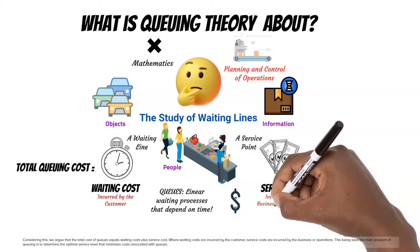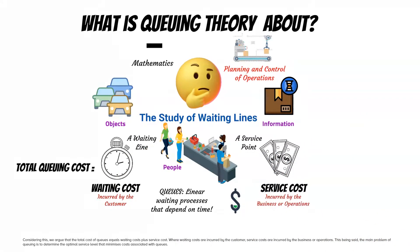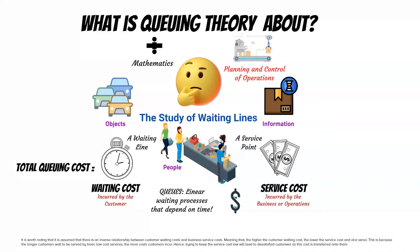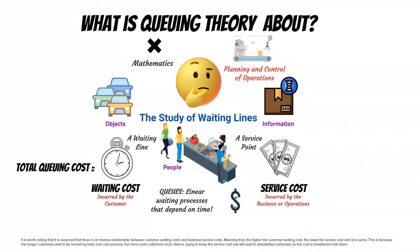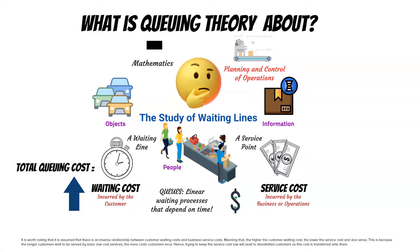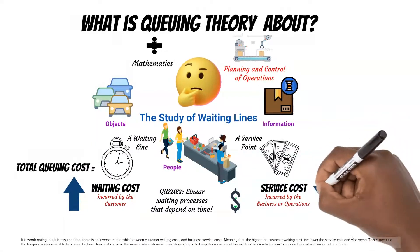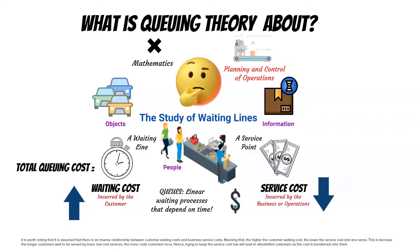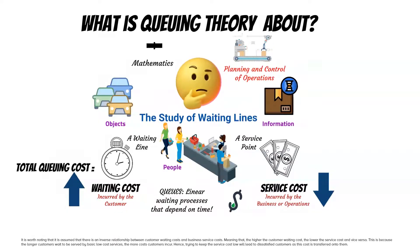Considering this, we argue that the total cost of queues equals waiting costs plus service cost. Where waiting costs are incurred by the customer, service costs are incurred by the business or operations. This being said, the main problem of queuing is to determine the optimal service level that minimizes costs associated with queues. It is worth noting that there is an assumed inverse relationship between customer waiting costs and business service costs, meaning that the higher the customer waiting cost, the lower the service cost and vice versa.